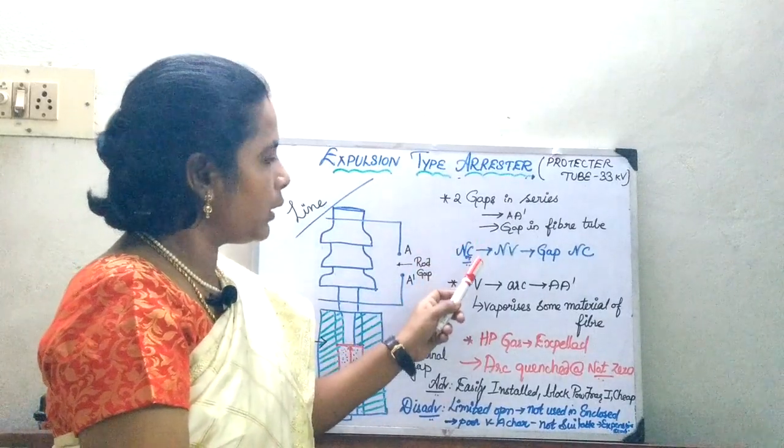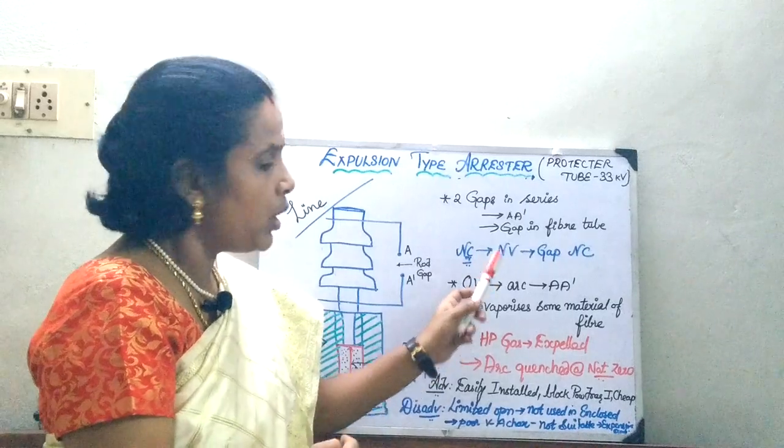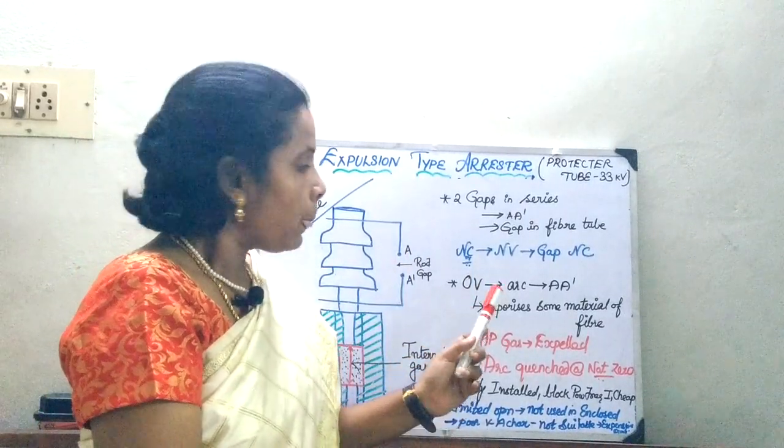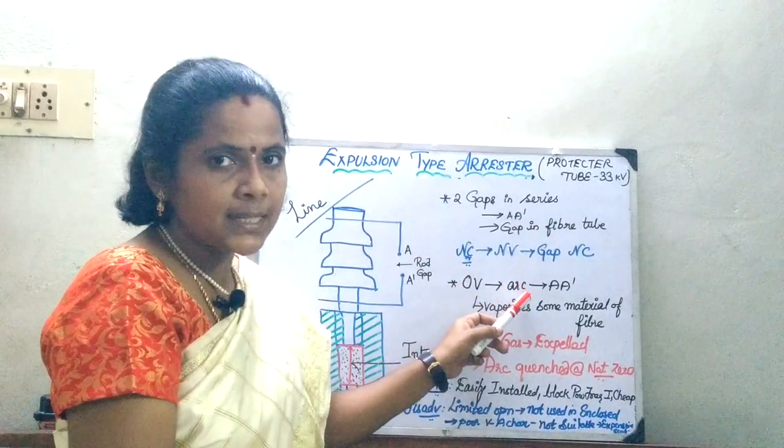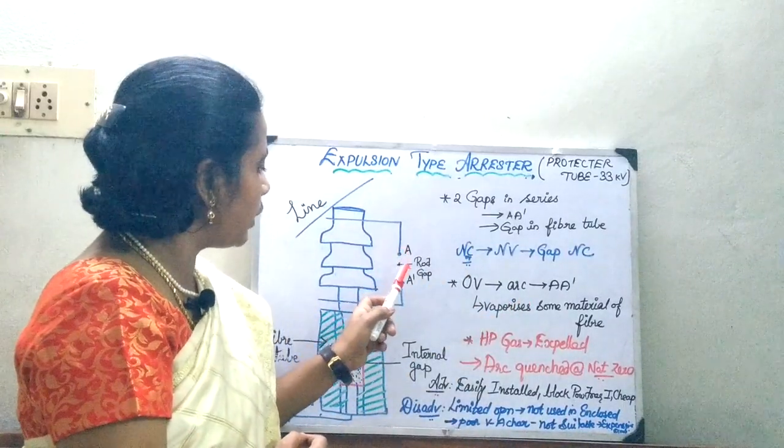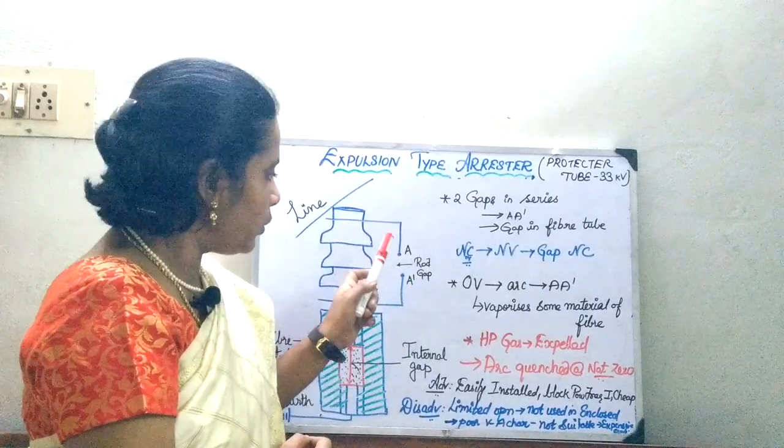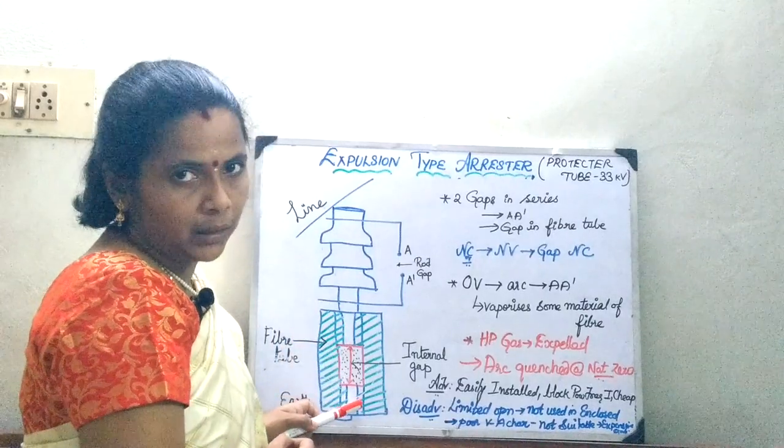Whenever under normal condition, the normal voltage will not be sufficient enough to cause a series sparking of both the gaps. Now, under over voltages, the arc which is going to be created due to this over voltage, it is going to create arc between the path A, A dash. Now, this arc or this rod gap, it is going to be in series with your fiber material.